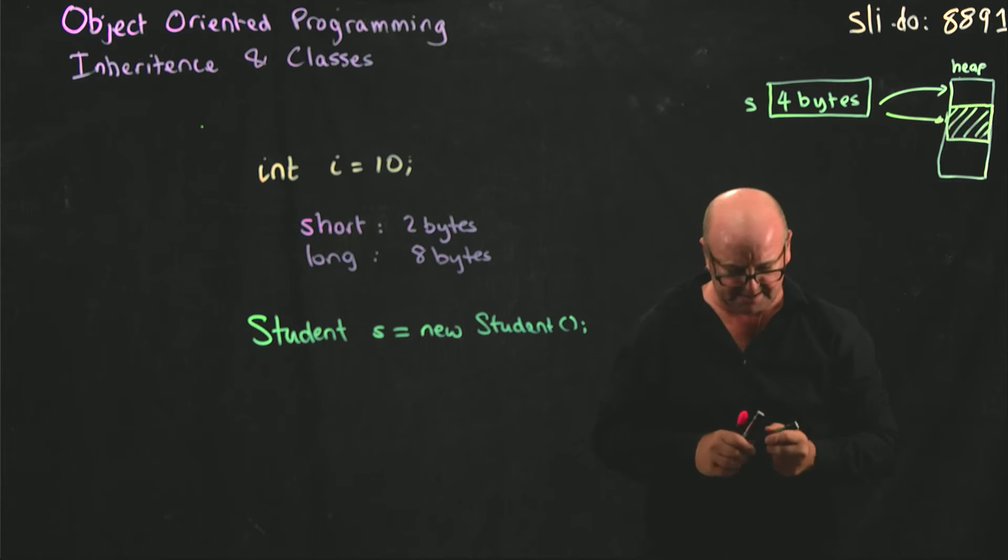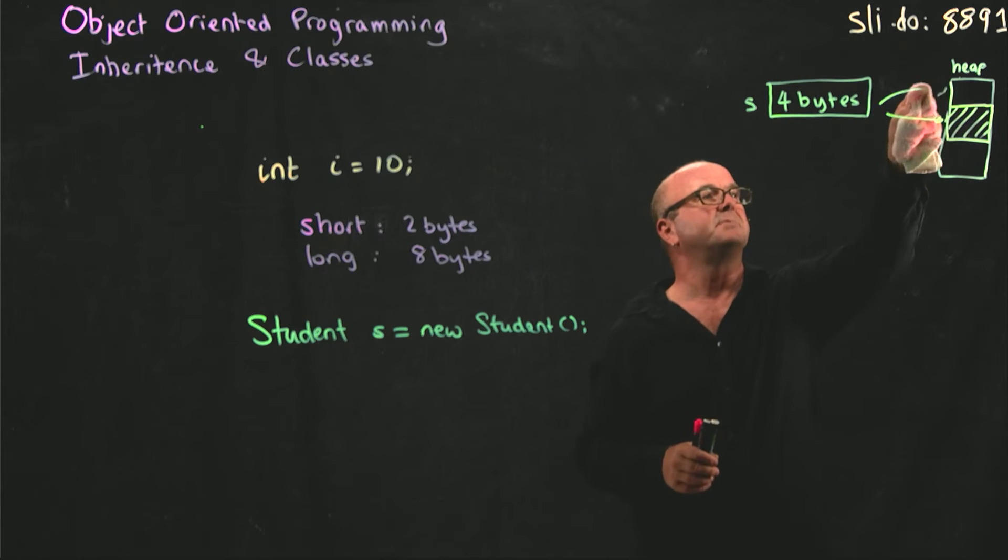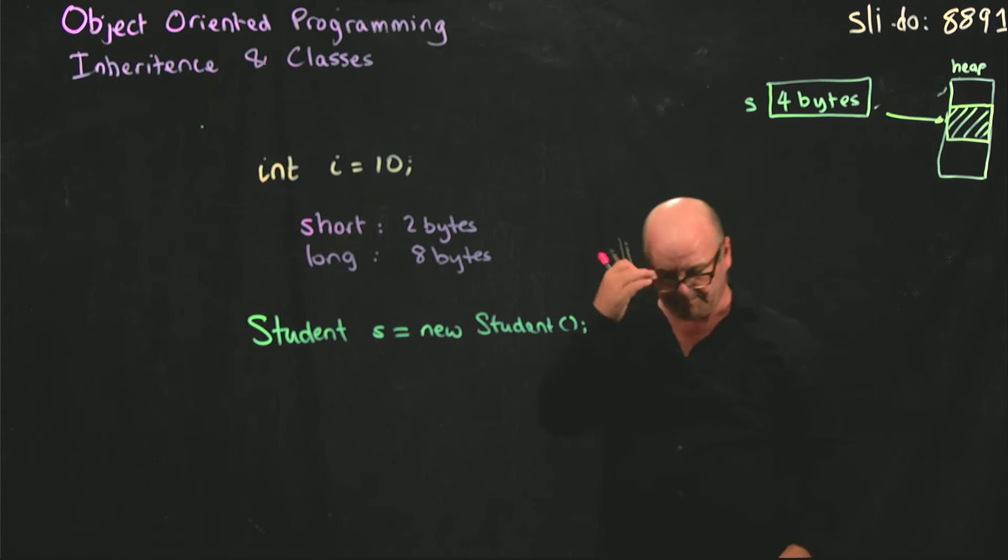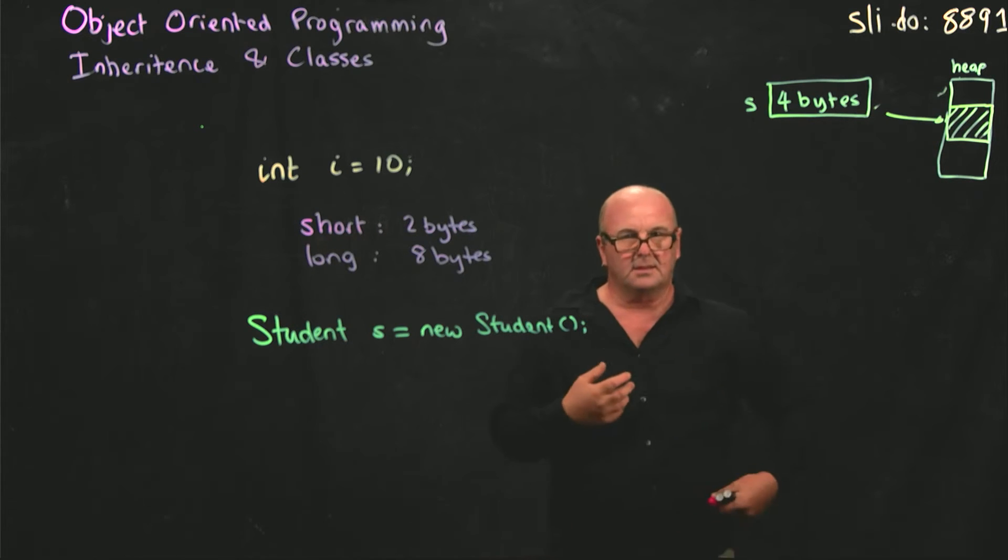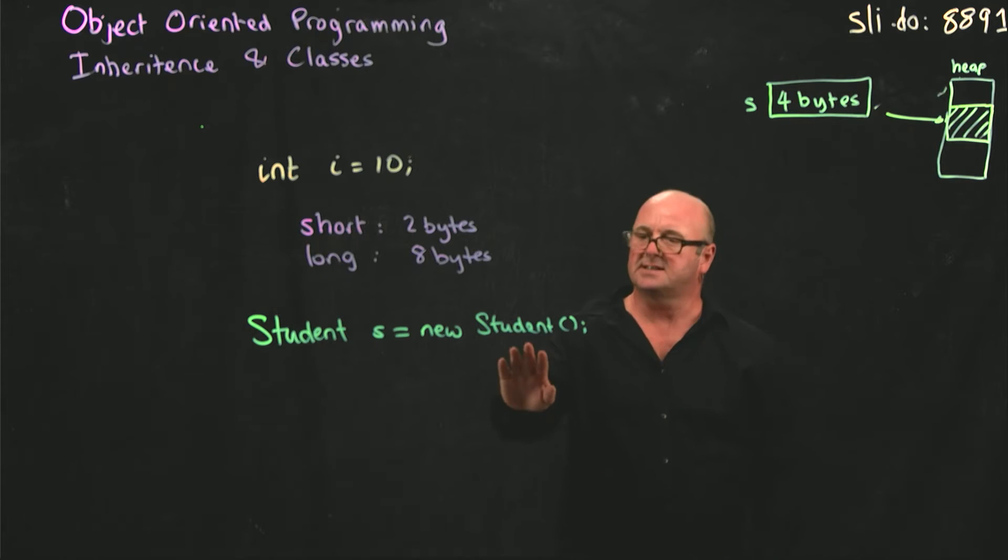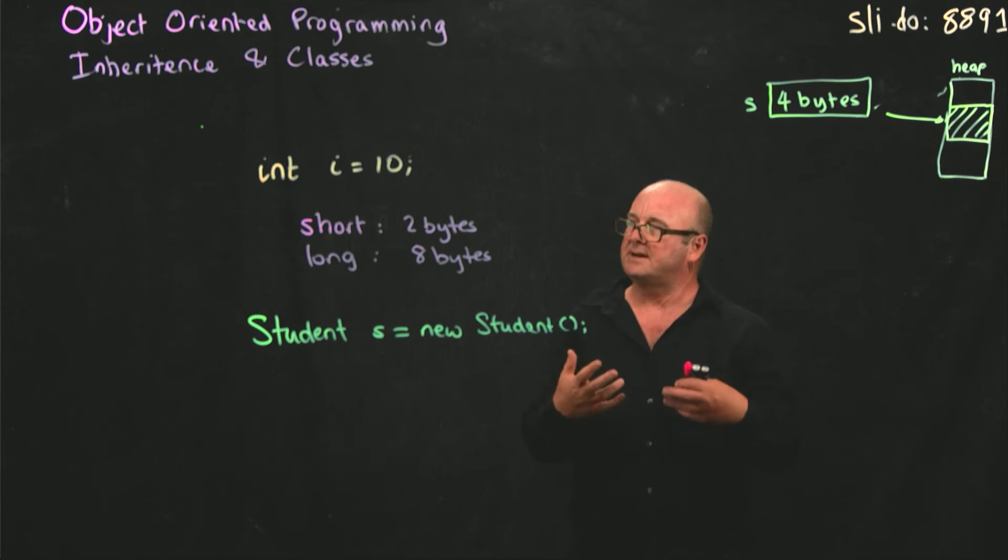I don't like my pointer that points to a random spot. And so the Java virtual machine needs to understand what a student object is, and where a student object comes from, so that it can allocate a certain amount of space.